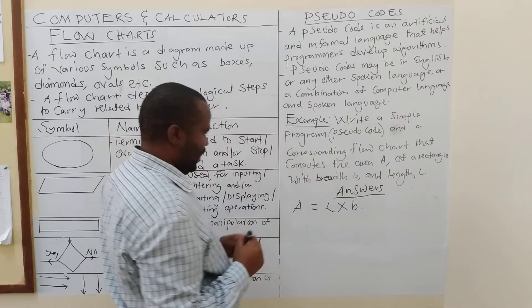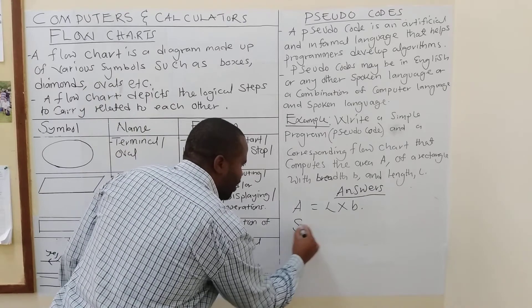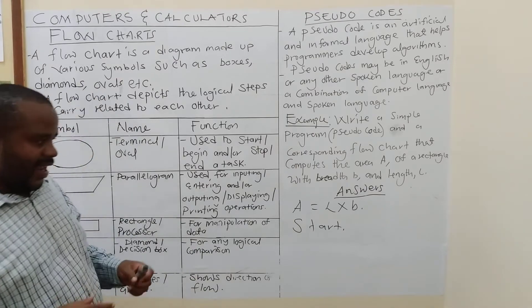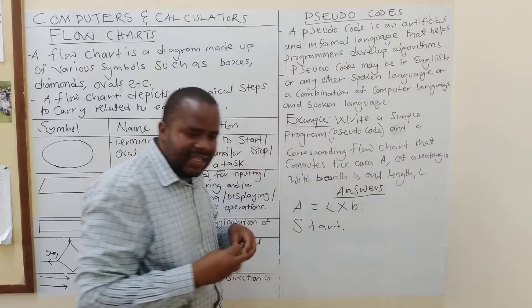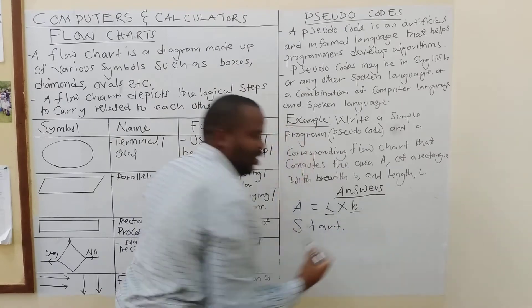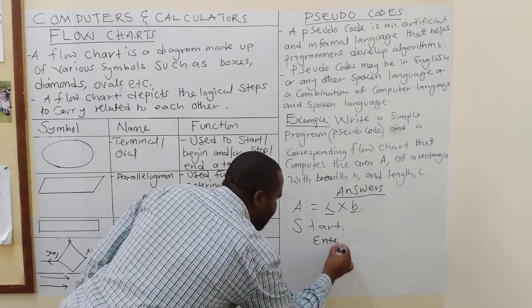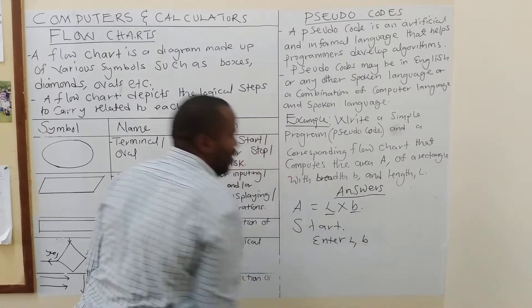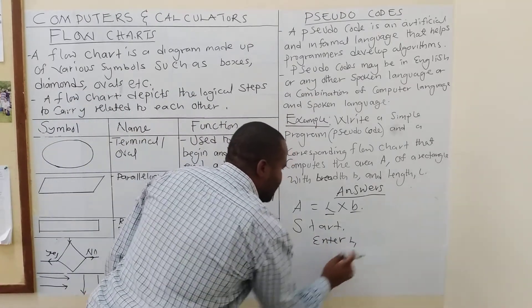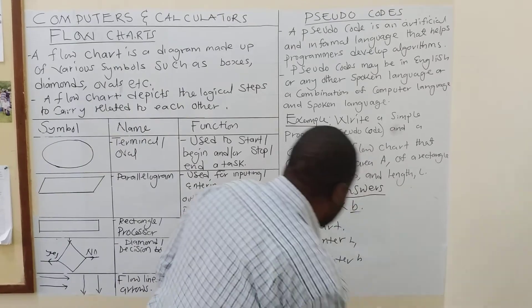So, now, how do we do our simple program? So, the first thing, you always start by saying, you start your program. Then, thereafter, you must input the things that you need in order for you to find the area. What do we need to find the area? I need the length and breadth. So, those things should be entered. So, you are going to say, enter length and breadth. Others do say, enter length, then enter breadth. But even in this line, I think it's true.